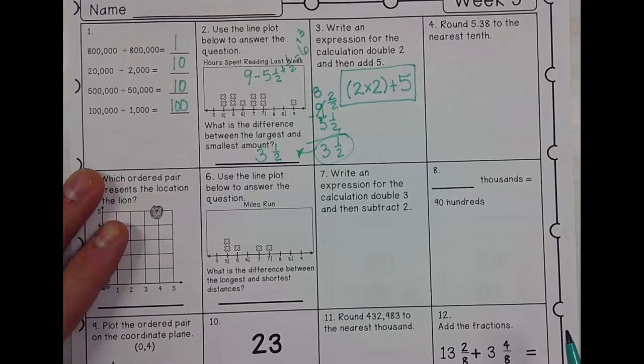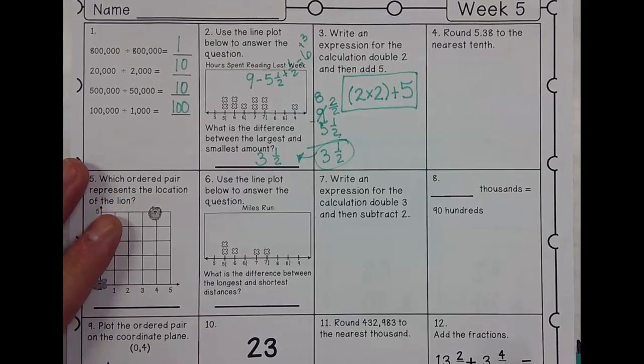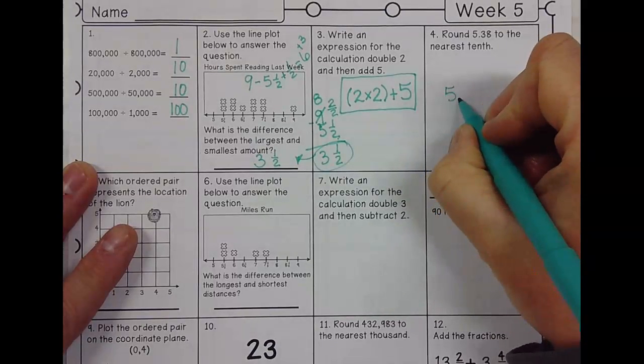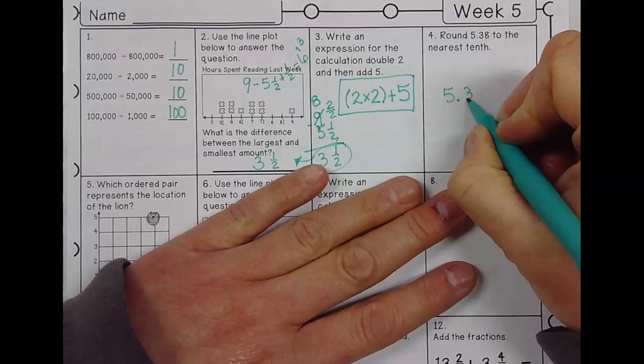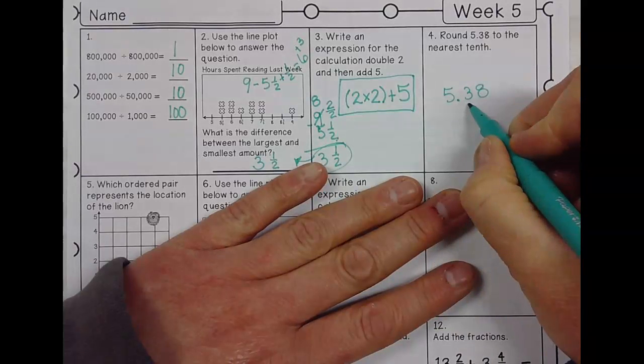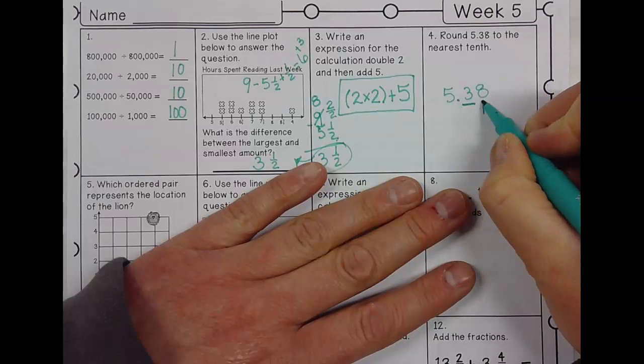Last but not least, we're going to round 5.38 to the nearest tenth. So five point three eight. So I first need to figure out where the tenths are. Well, this is where the tenth is. Then I need to point to the next door neighbor.